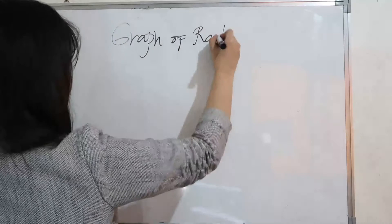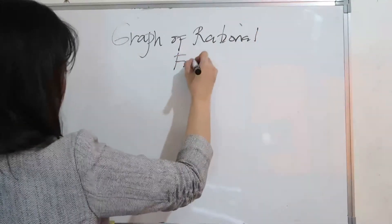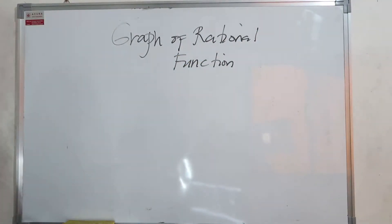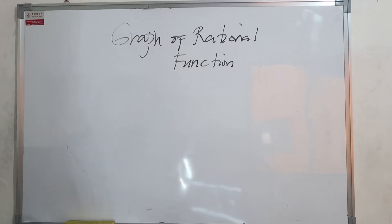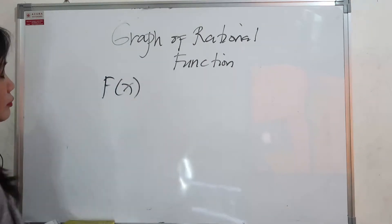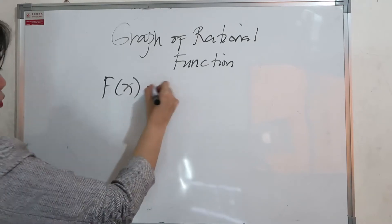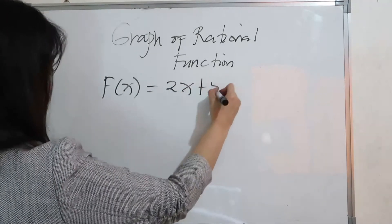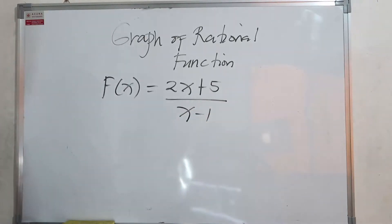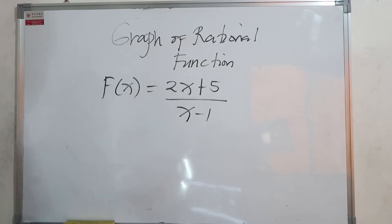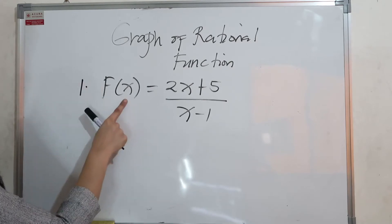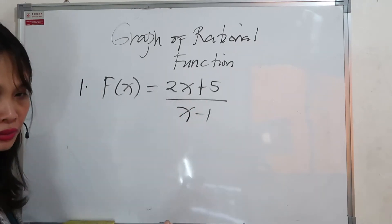Today's topic is graphing an irrational — rational — function. Our main goal is to graph a rational function and to determine the domain and range of that particular function. For example, number one: f of x is equal to 2x plus 5 over x minus 2.